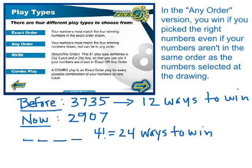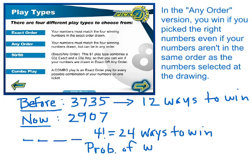So the difference between the two approaches: when we had the repeated threes we had twelve ways to win, but by choosing four separate digits you get twenty-four ways to win. Your probability of winning, instead of twelve in ten thousand, is now twenty-four in ten thousand — that's 0.0024.